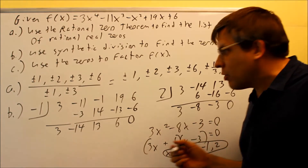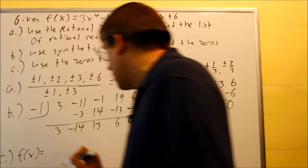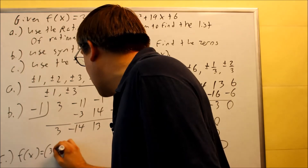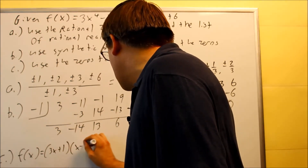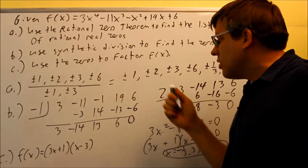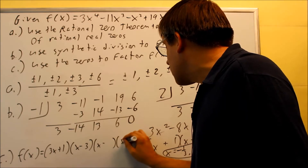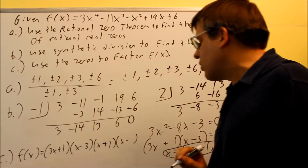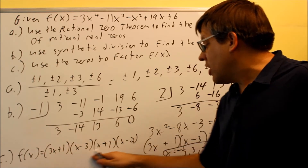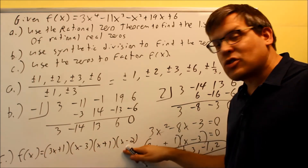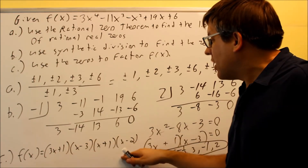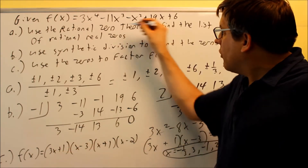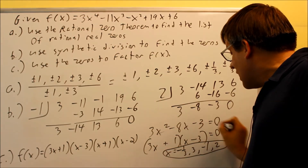Now for Part C, we want to factor f of x completely. Part of my answer is already this section: (3x + 1) and (x − 3). When you write the factors from the other zeros, remember it's always x minus whatever the zero is. So x minus negative 1 becomes x plus 1, and I have x minus 2. So the fully factored form is (3x + 1)(x − 3)(x + 1)(x − 2). All four of these multiplied together equal the original polynomial, and all of them correspond to the x-intercepts.